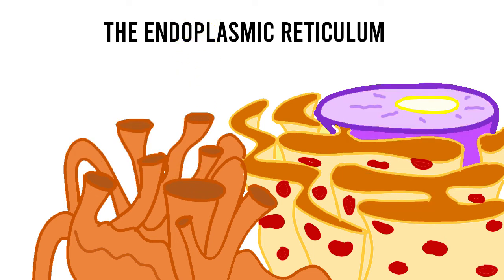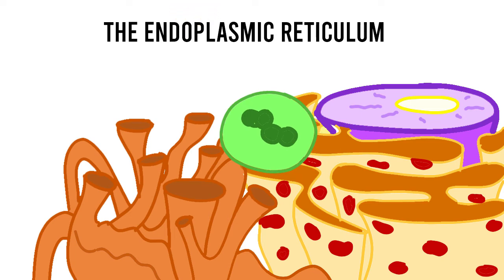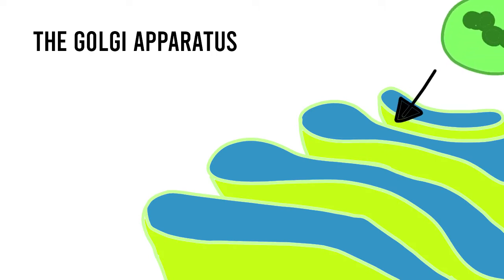Sometimes, the proteins produced in the rough endoplasmic reticulum will remain there while other proteins are transported to other structures within the cell such as the Golgi apparatus.